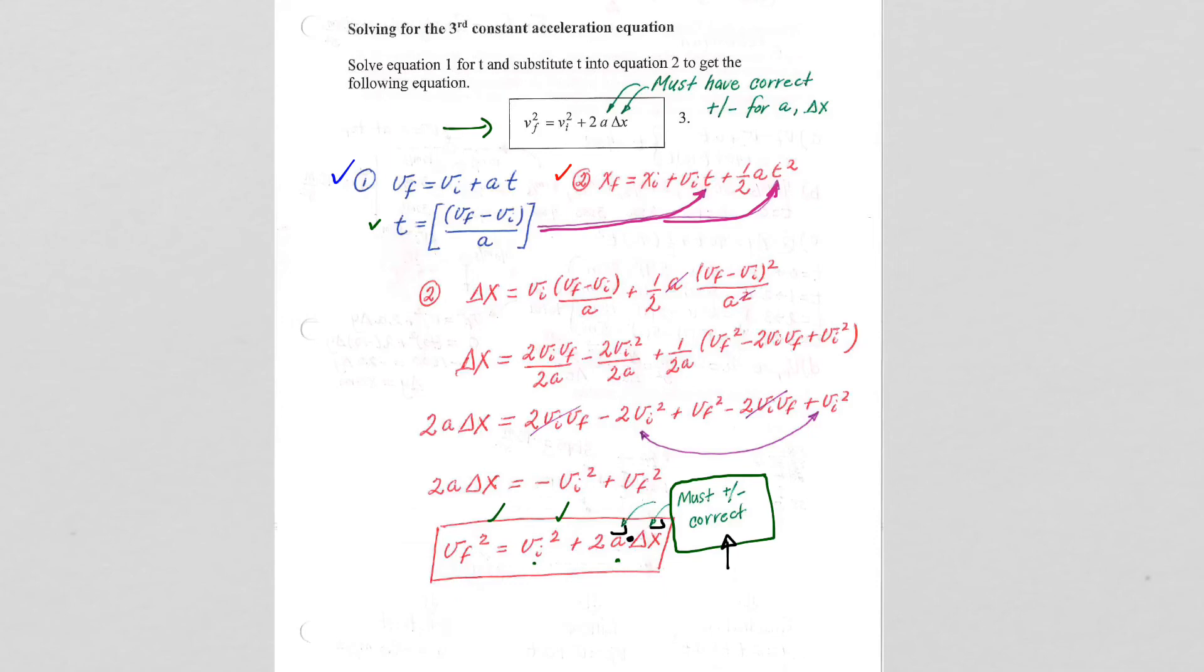Well, the first thing I can tell you is that if you read the question and they do not mention time in the question, then I would immediately go to v_final squared equals v_initial squared plus 2a delta x and see if that will solve it for me. Now, notice if they mention time, I probably would go back to equation 1 or equation 2 because they both have time in the equation to help me solve that problem.